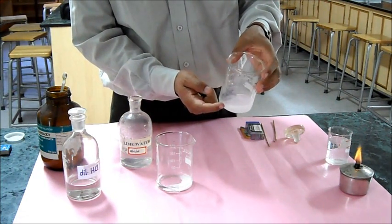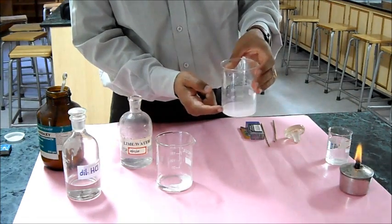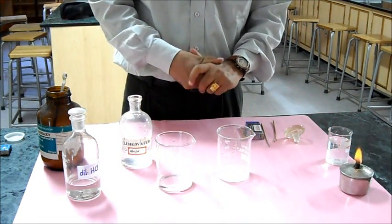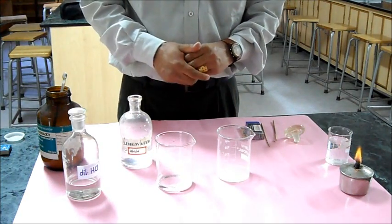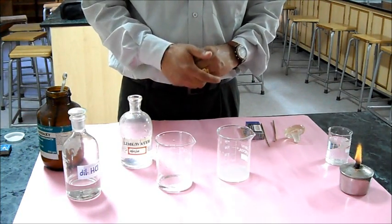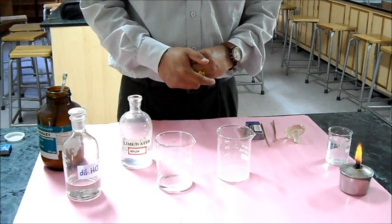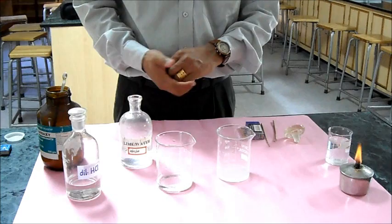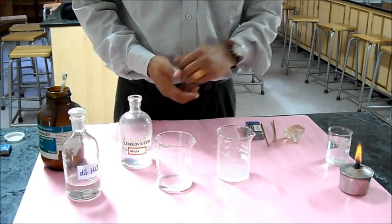This precipitate is nothing but calcium carbonate. This is how we can show the experiment between metal carbonate and acids, and we can verify and test the gas produced during the reaction as carbon dioxide.